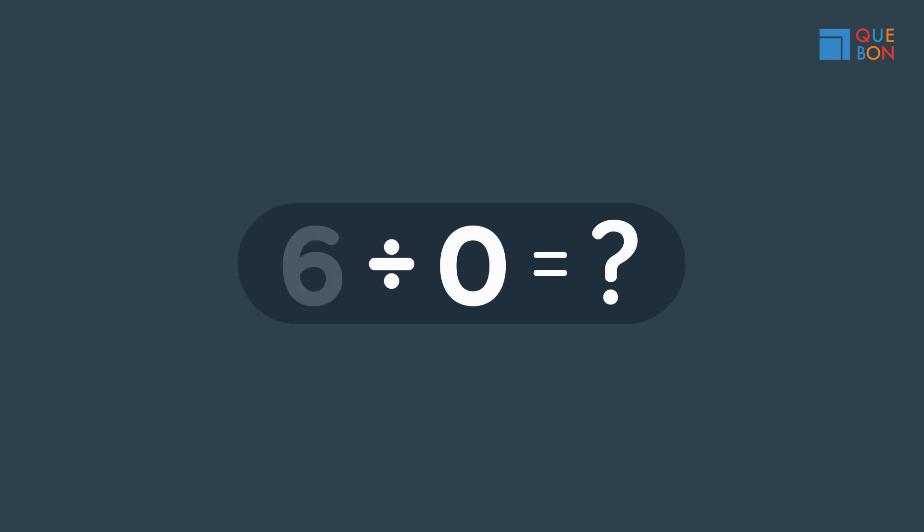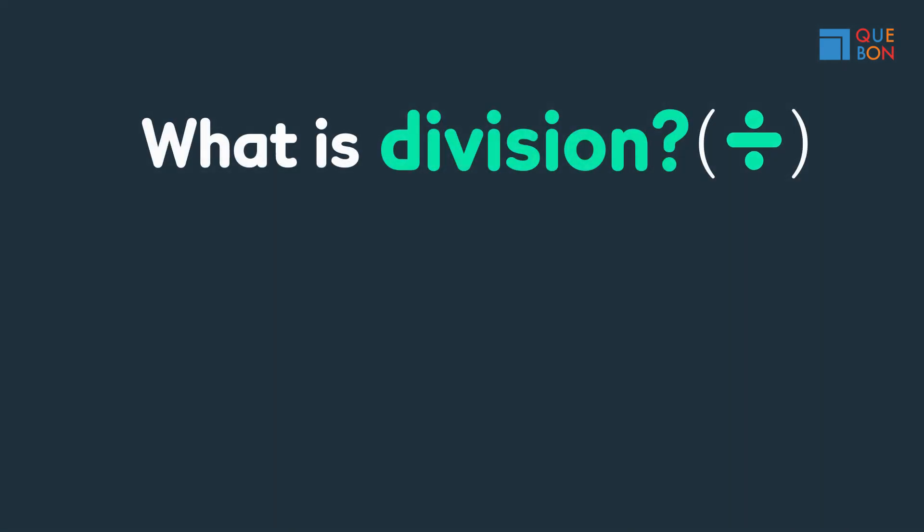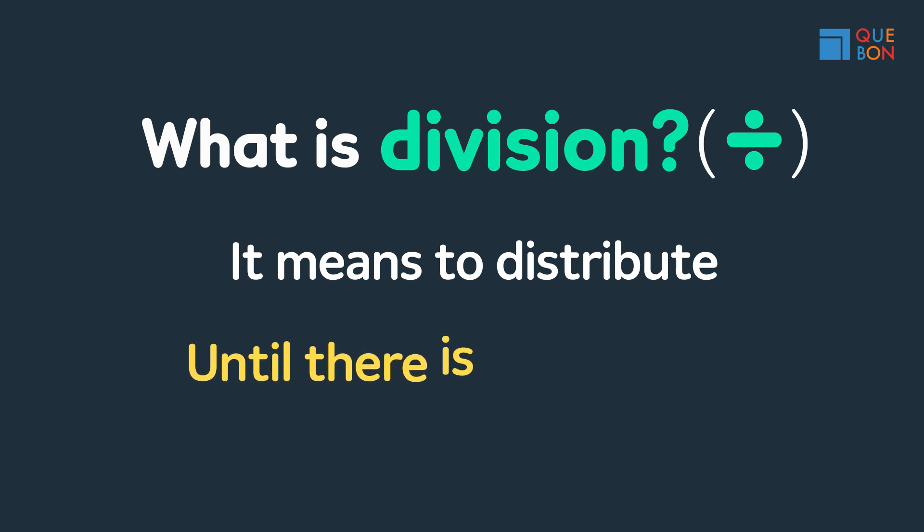Six divided by zero is the same thing as dividing six by zero. Well, duh! To divide is to distribute. Its definition is extremely simple. But, when do you need to stop distributing? Until there's nothing left to distribute!